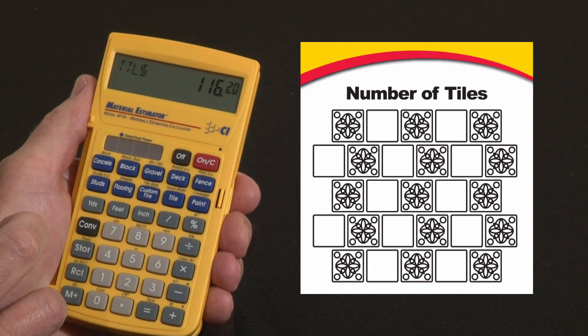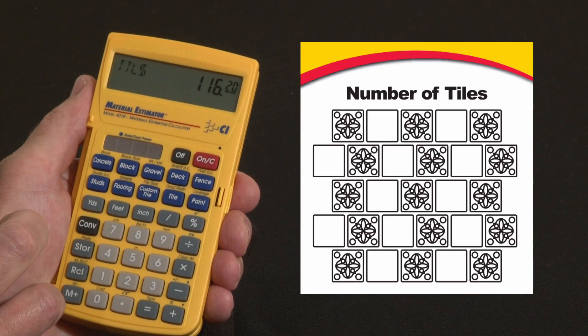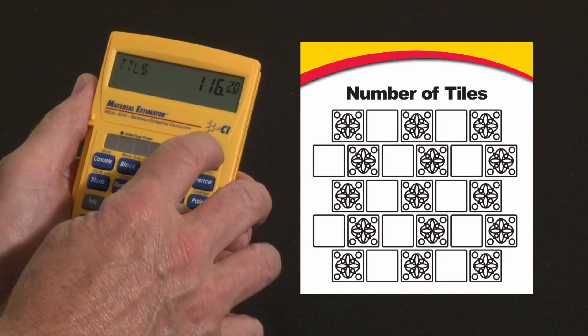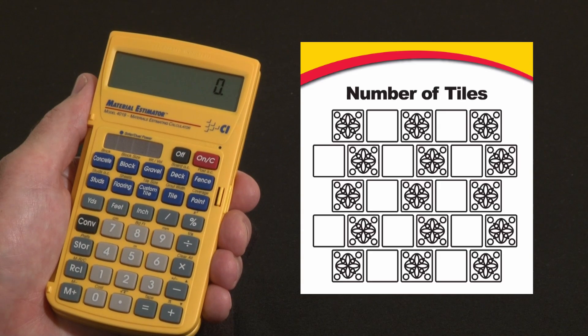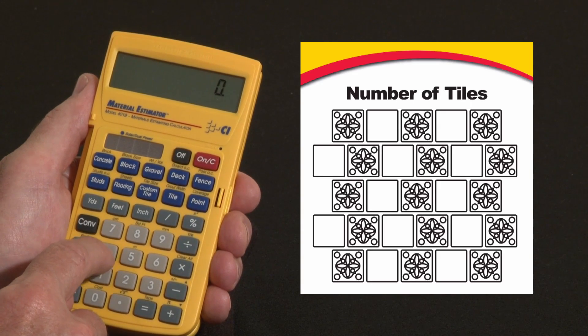Now sometimes there's a tile you want that isn't a standard square tile. Maybe there's a 4-by-8-inch tile that you really like. You can use the custom tile feature to figure out how many of those you need. Say we're going to do it on the same 32 square foot countertop, but first we store in that custom tile size.